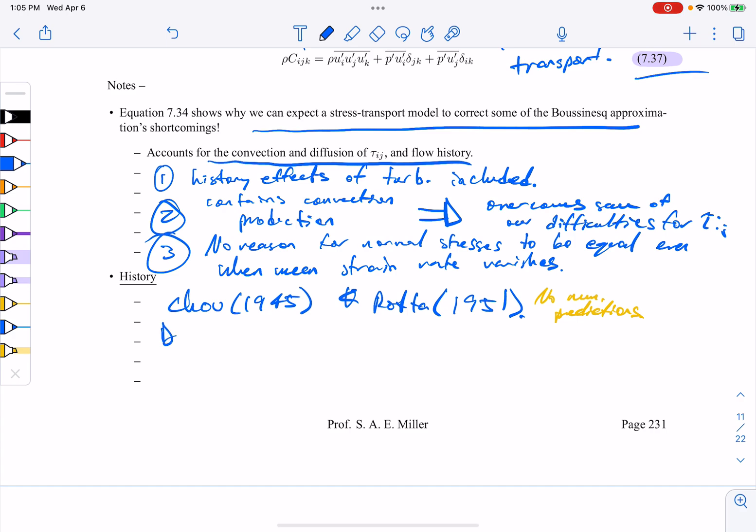Two other major authors, Donaldson, in 1968, advocated the concept of invariant modeling, and that's where you establish the type of closure that rigorously satisfies coordinate invariants.